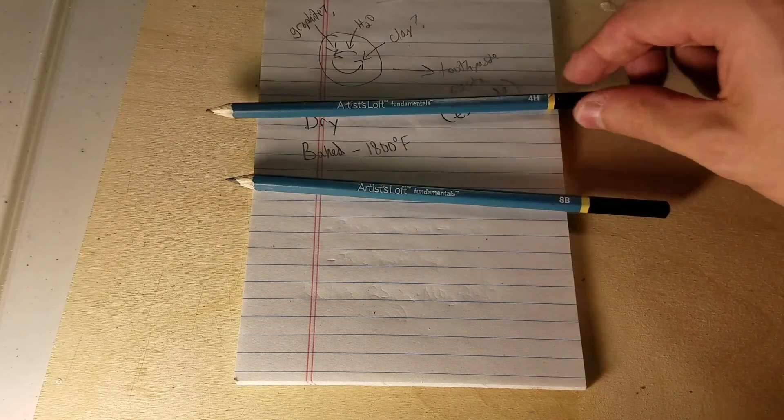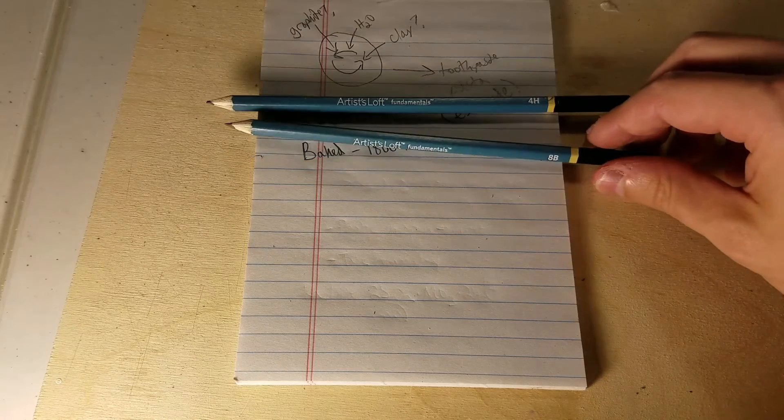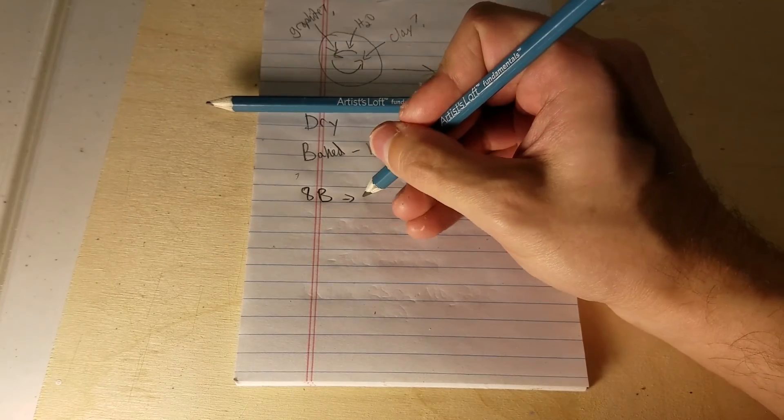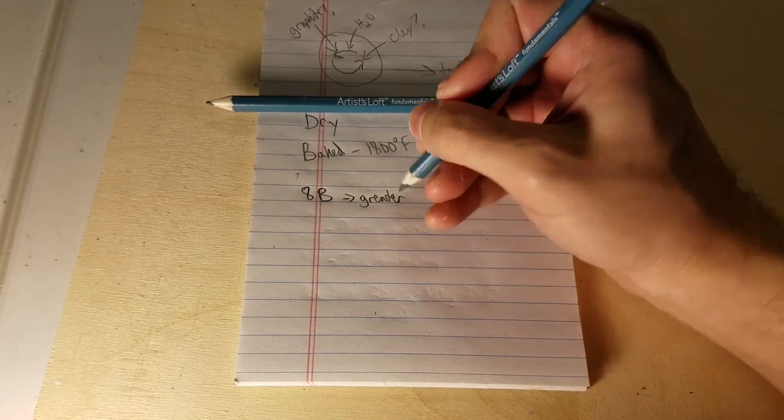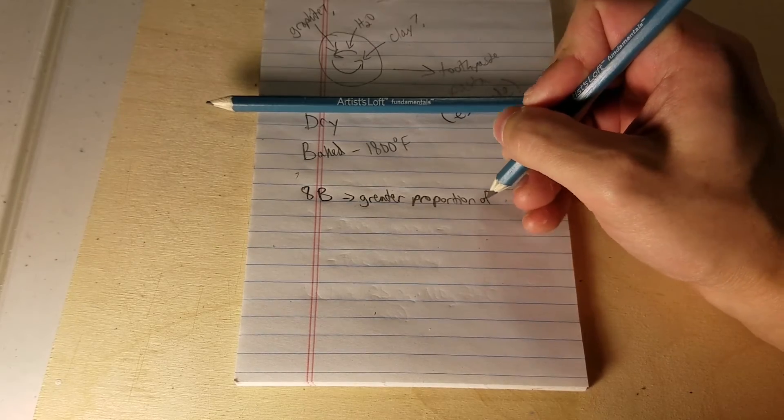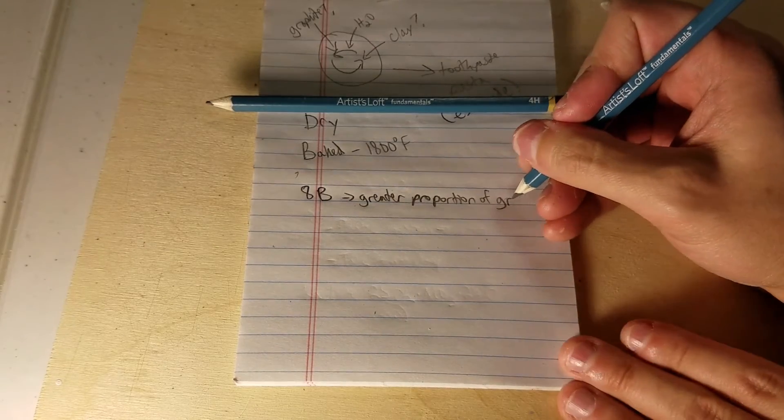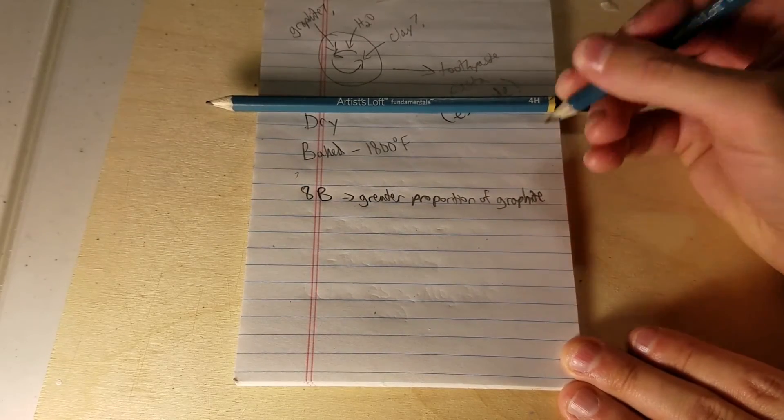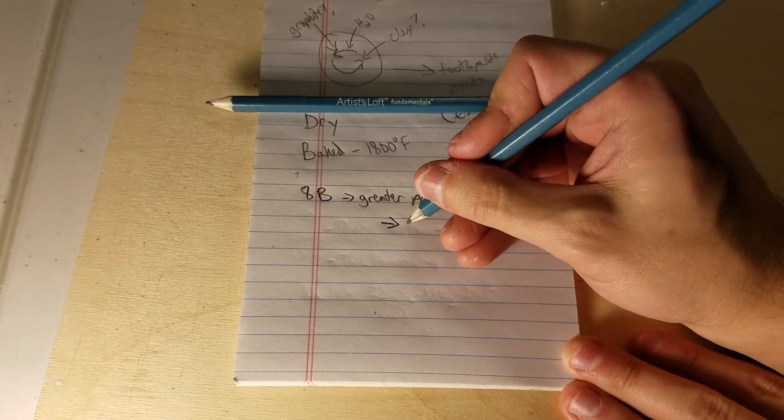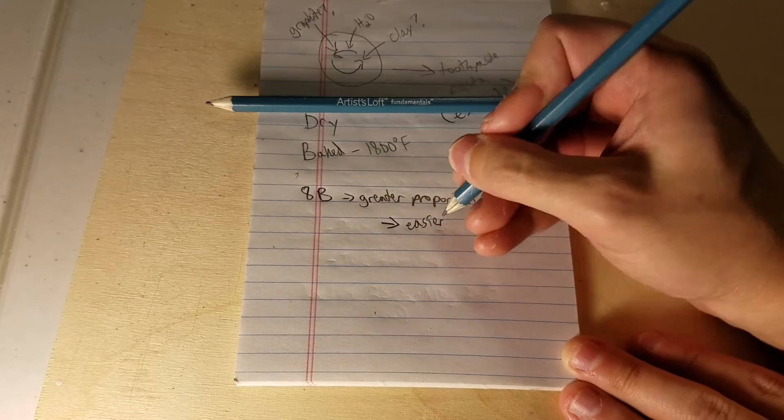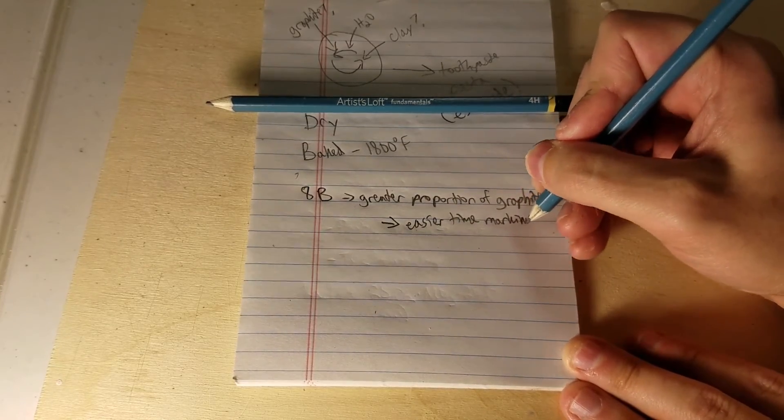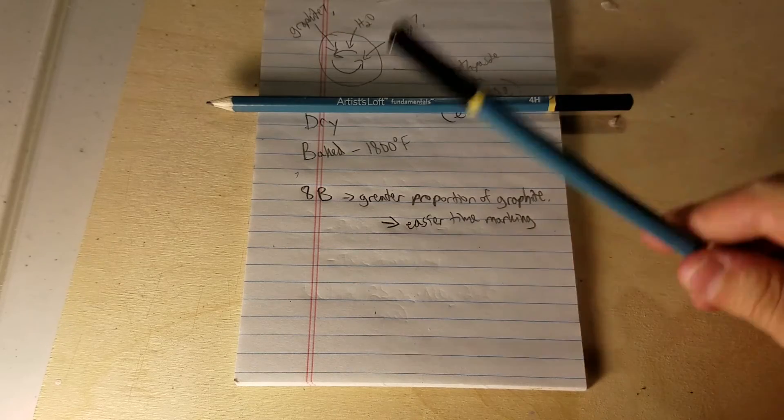Basically an 8B pencil, pick that one up first. So here's our 8B, is going to have a greater proportion of graphite in the mixture. And the benefit of that is that you are going to have an easier time marking. Because that graphite will come off onto the paper quite easily.